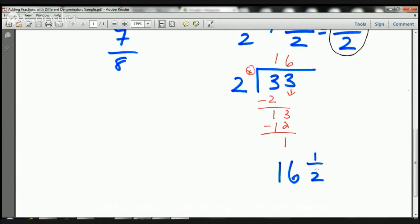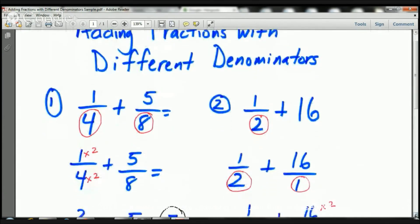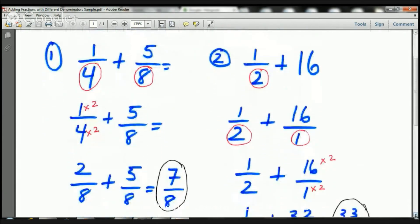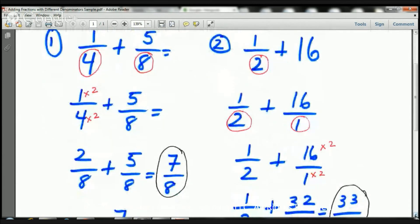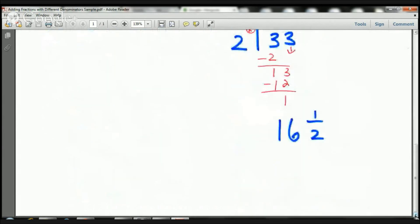So, we have 16 and a half. And guess what, boys and girls? And I know that some of you already knew this, but you were looking at it, at this problem, and you said, 1 half plus 16, well, that's 16 and a half. And you would have been absolutely correct. Take a look. The answer is 16 and a half.